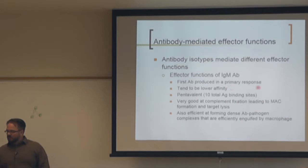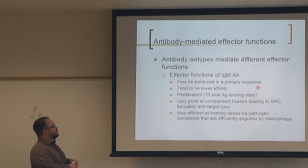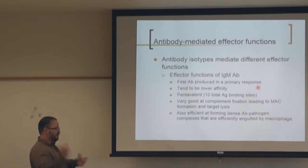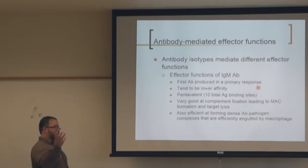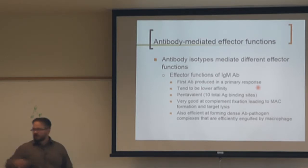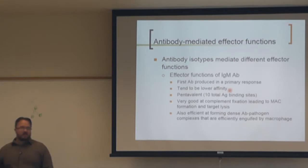IgM is the first antibody produced in a primary response because class switching hasn't occurred yet. When B cells encounter their cognate antigen, they either immediately produce plasma cells secreting IgM, or go to germinal centers and undergo class switching to produce IgG or other isotypes depending on the cytokines present. The secreted form of IgM is pentameric and tends to be lower affinity.